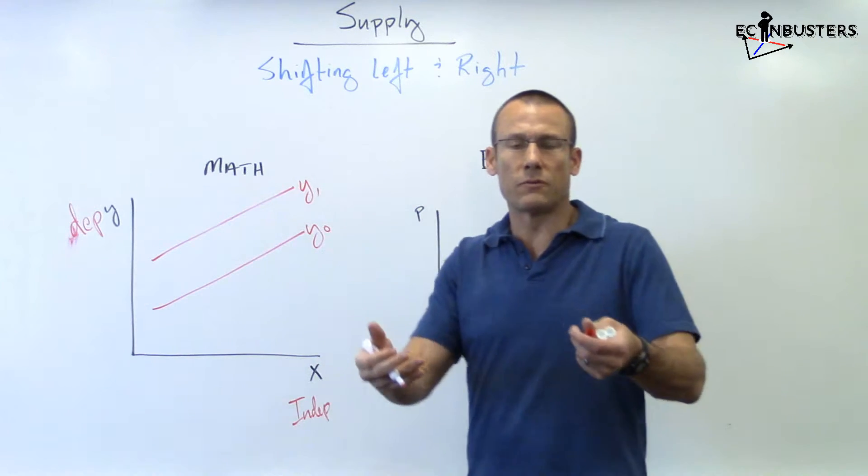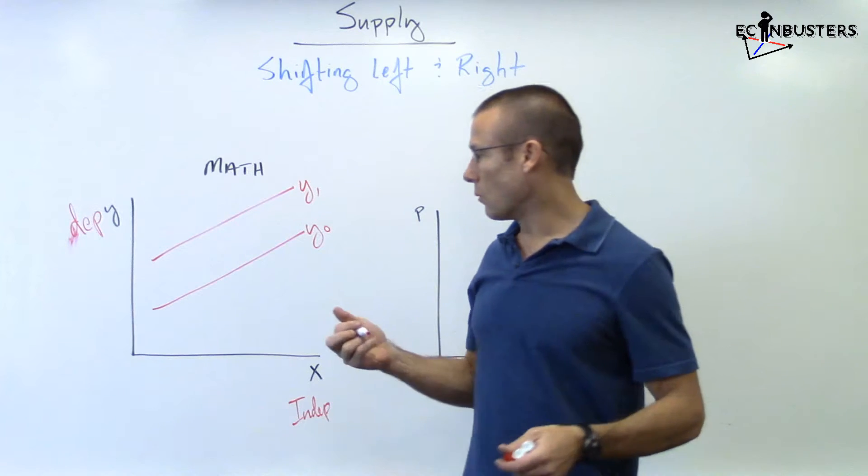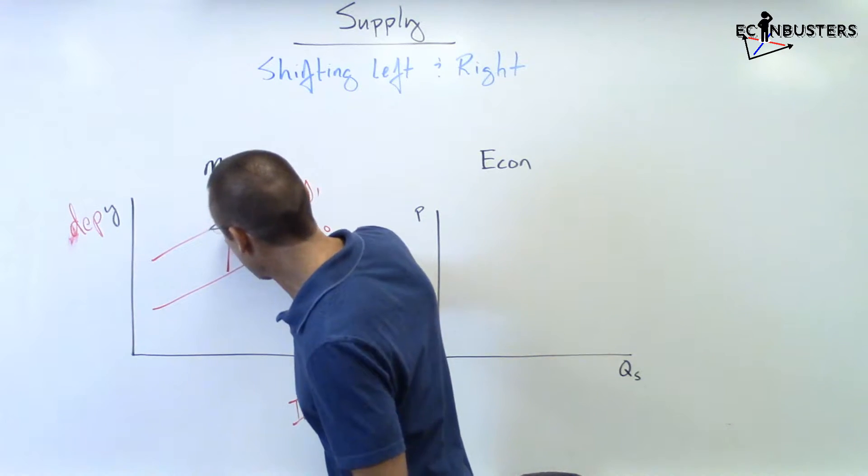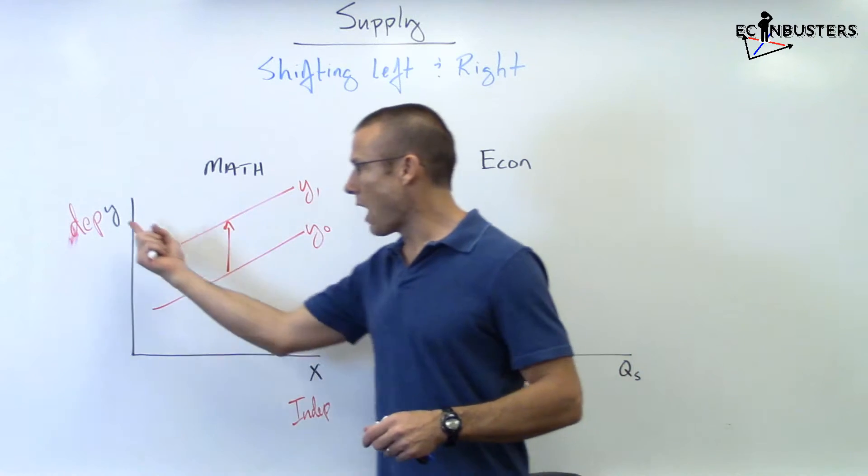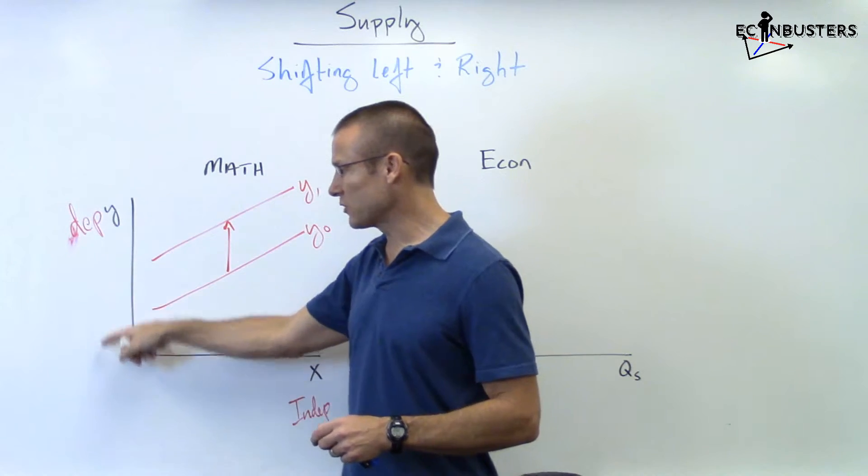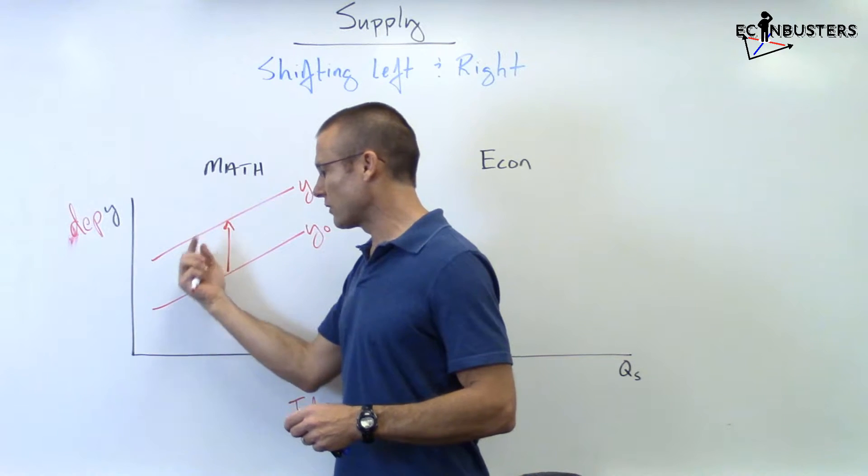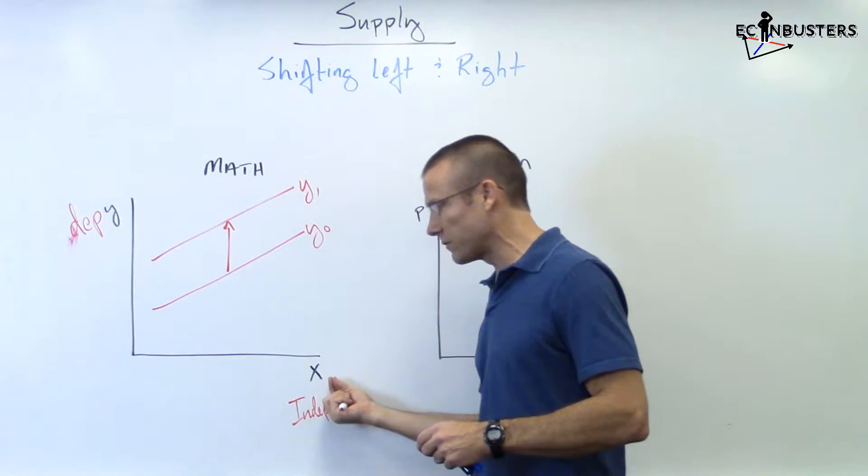and you're asked what happened to the function, what happened to y? Well what should you say? You should say y increased. This function increased. Y, the dependent variable measured vertically, increased at all values of x.